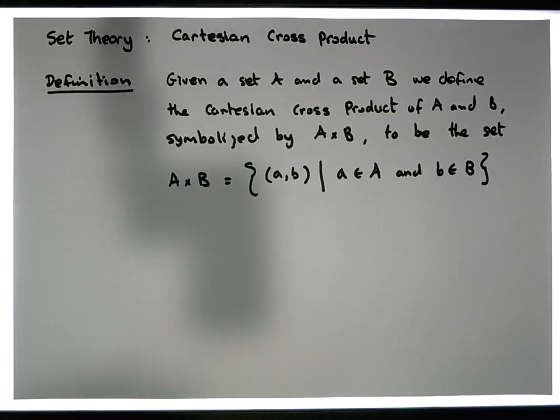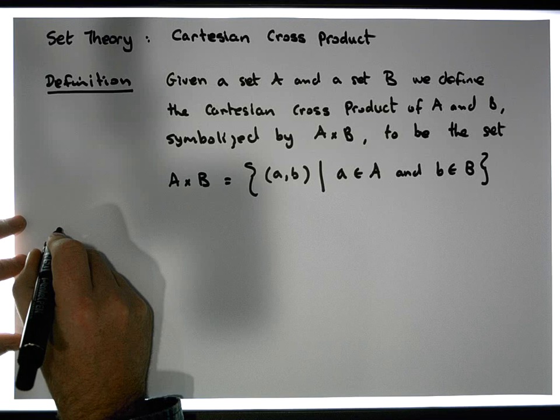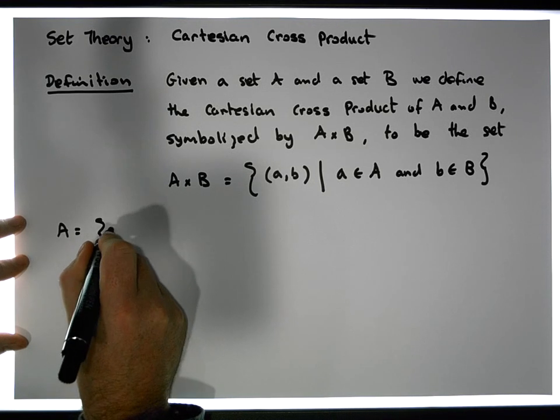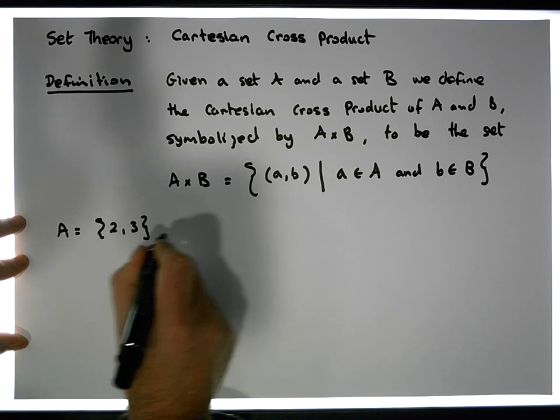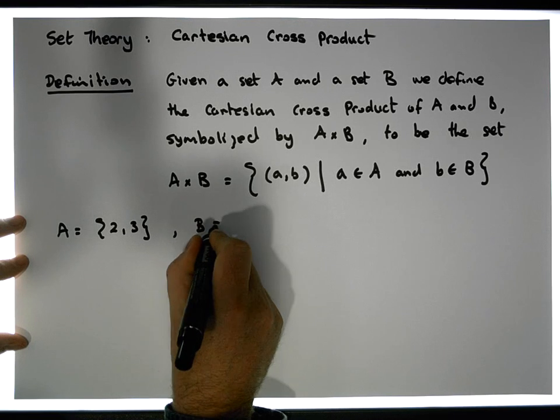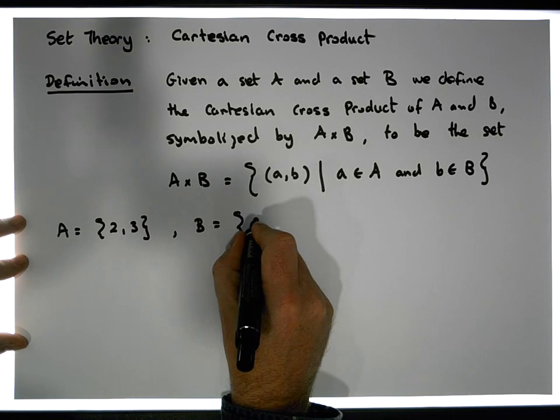So let's have a look at a particular example. Let A be the set that contains 2, 3, and let B be the set that contains the values 7, 6.